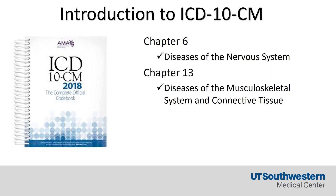When you think about the ICD-10 coding book, this is really a complete documentation of all the codes that we have available to us. In chapter six, diseases of the nervous system, this is where you would find the M codes, and chapter 13 is really where you would find the musculoskeletal and connective tissue codes.